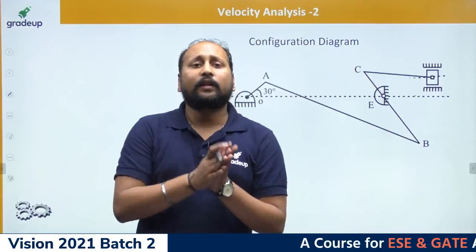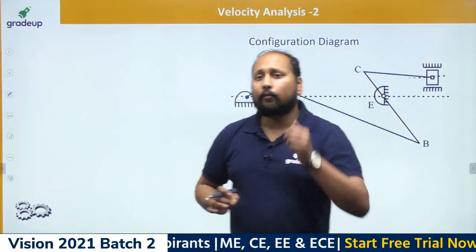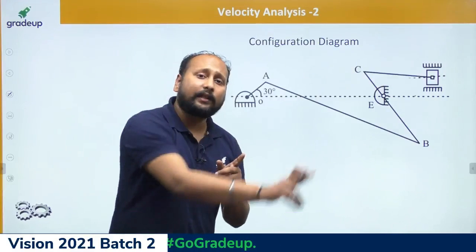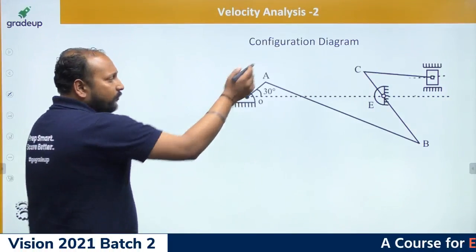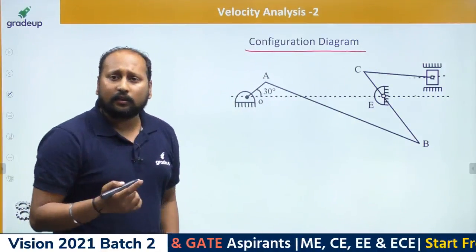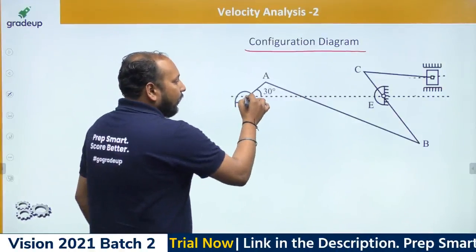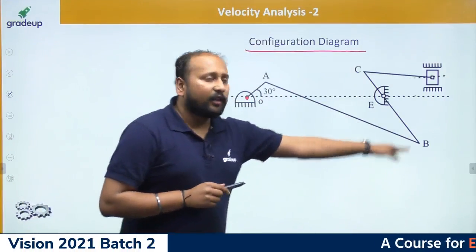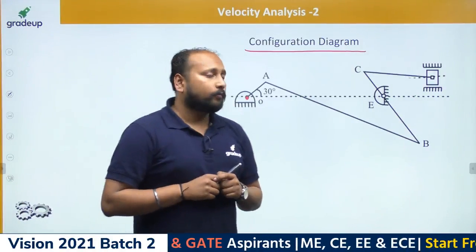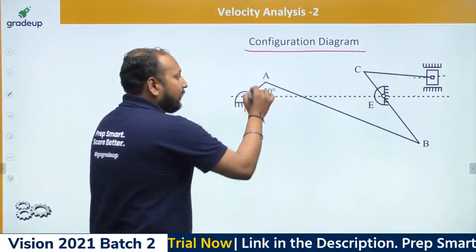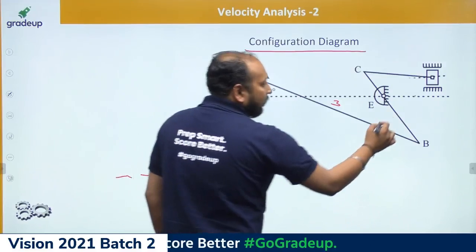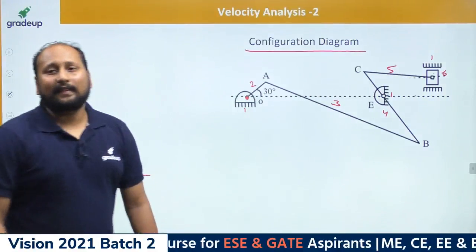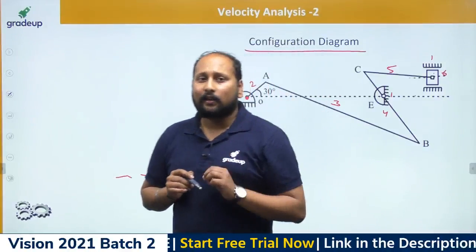Let us understand with a configuration diagram, and draw a velocity diagram from it. The configuration diagram is basically the link assembly. In this arrangement, there are six links: link 1 is fixed, link 2, link 3, link 4, link 5, link 6, and link 1 again which is fixed. All the fixed parts are taken as a single link. So in total we have six links shown in this diagram.